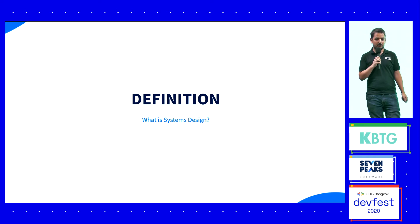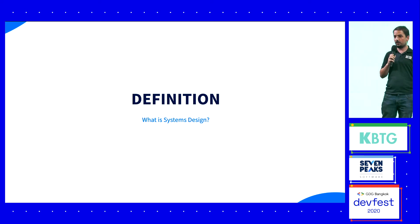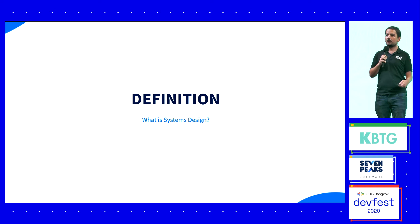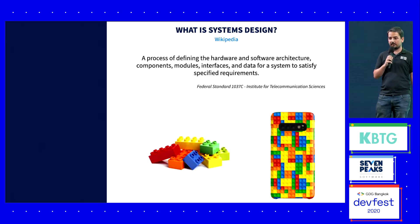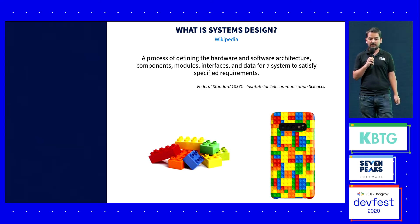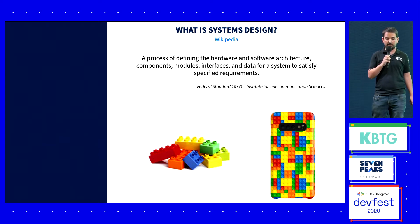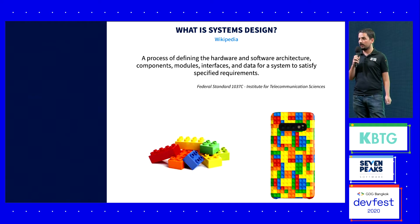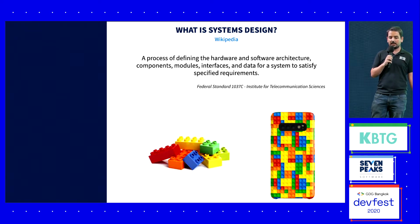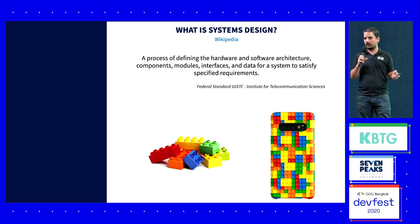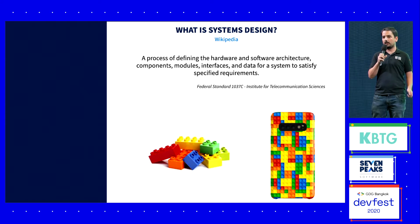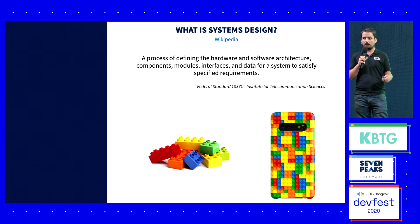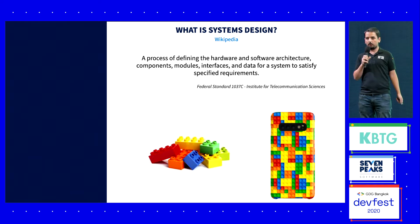So let's talk about system design. What is system design and what will we be talking about? System design, according to Wikipedia, is a process of defining the hardware and software architecture components, modules, interfaces, and data for a system to satisfy requirements. To make it short, it's just how you will use components, which components you will use, and how you will assemble them in order to have an application that will solve a problem.